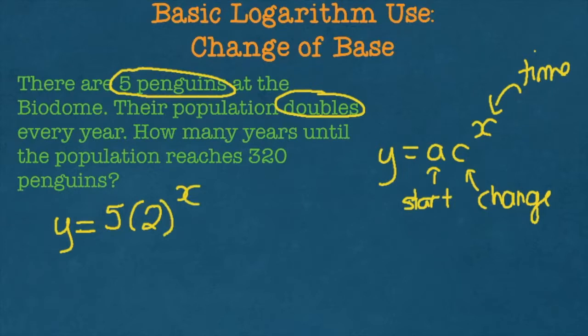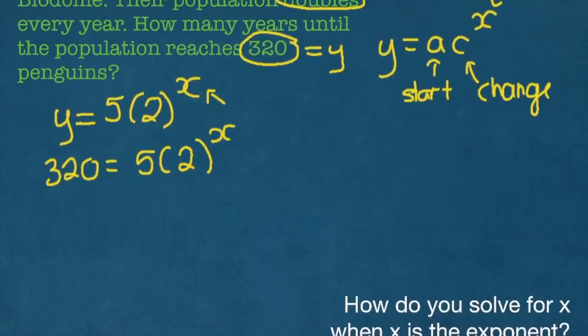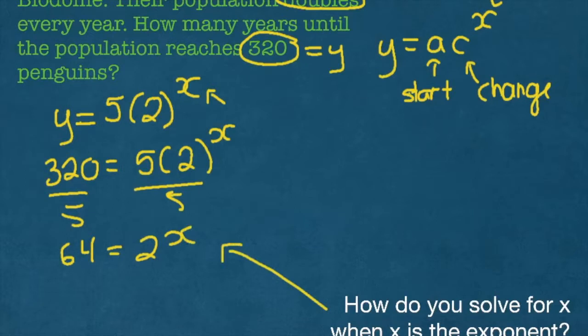Now I know that the population reaches 320 penguins at a certain time, but I need to know what the time is. So this 320 is going to equal to my y. So I'm going to do 320 is equal to 5 times 2 to the x. And if I simplify further, if I divide both sides by 5, I'm going to get 64 is equal to 2 to the x. And that's where this question comes in. How do you solve for x when x is the exponent?